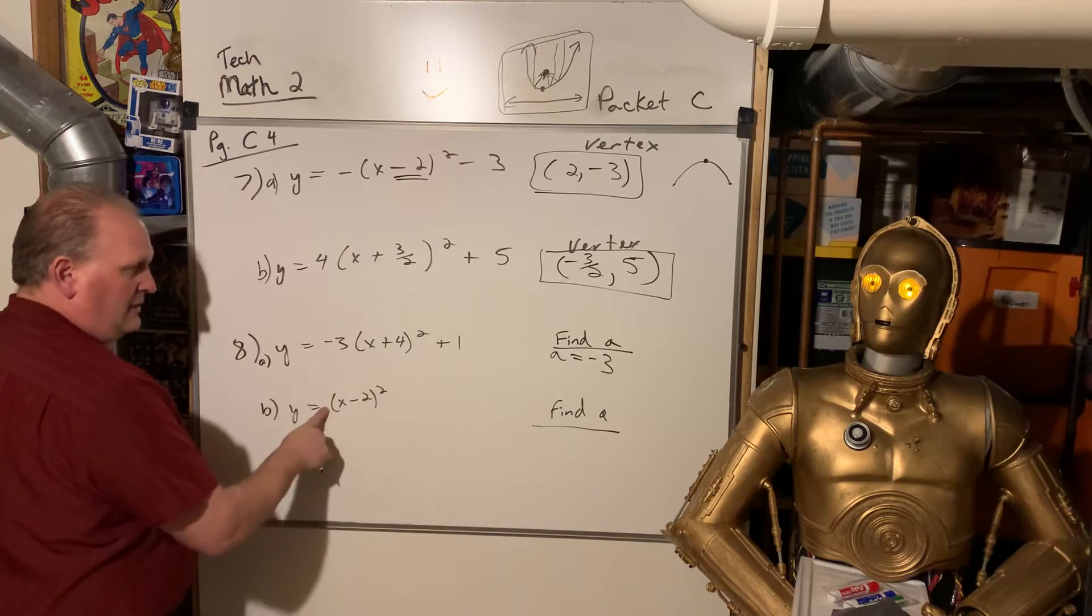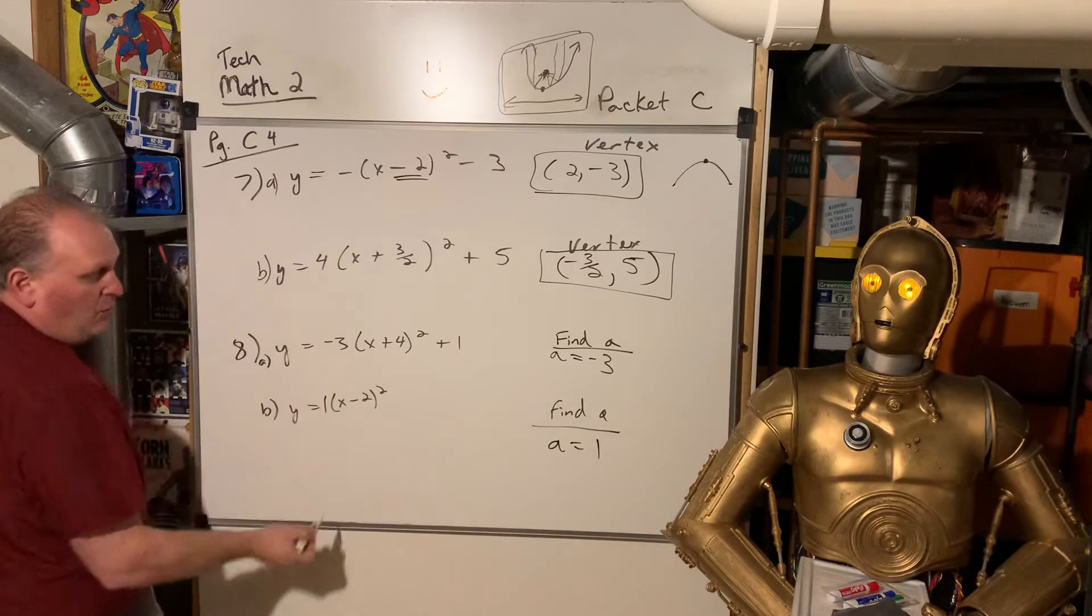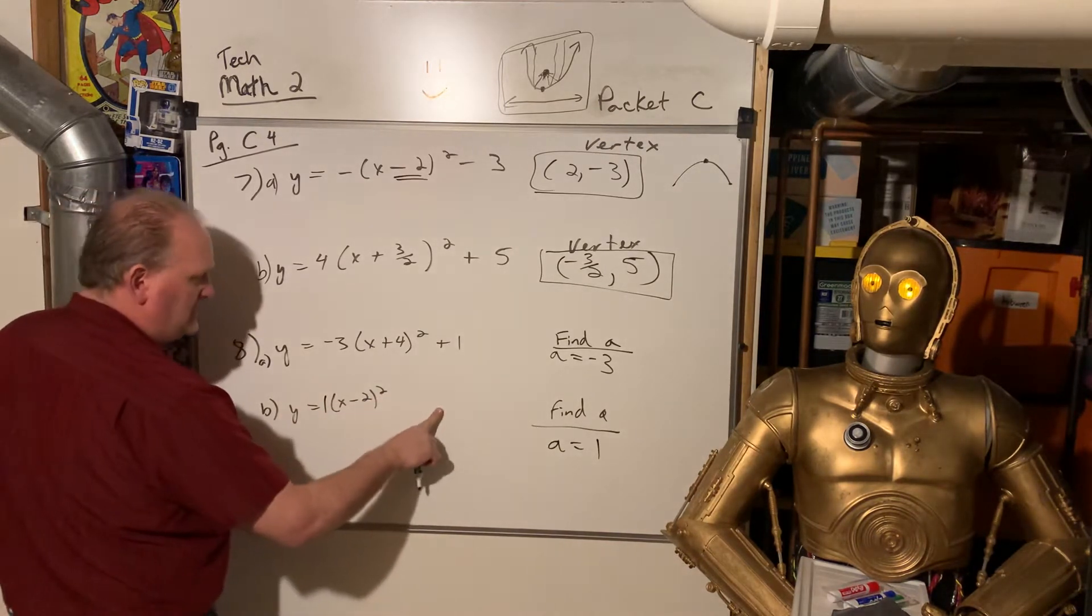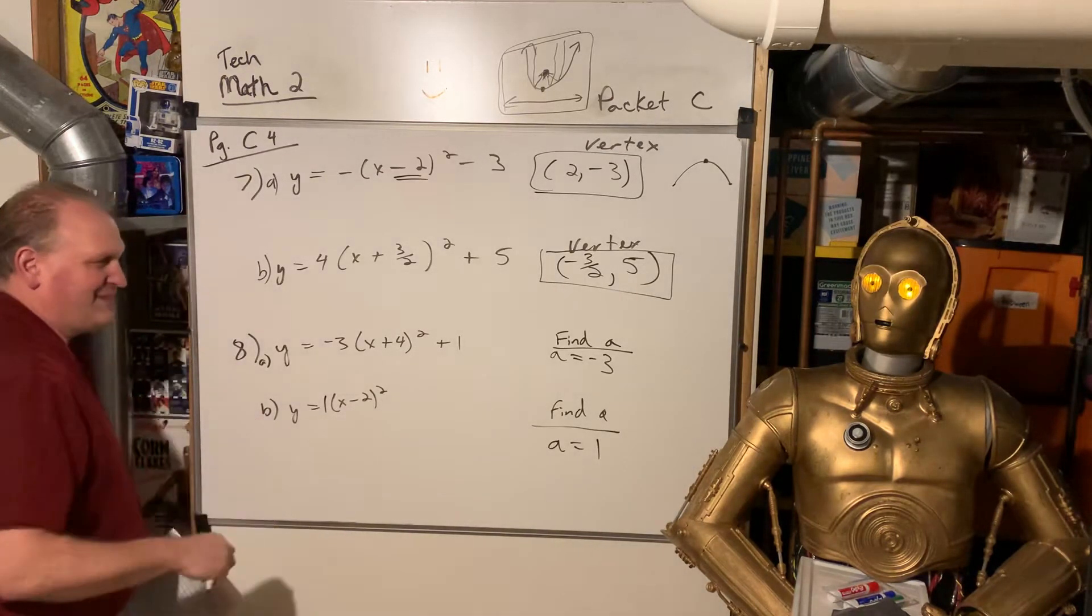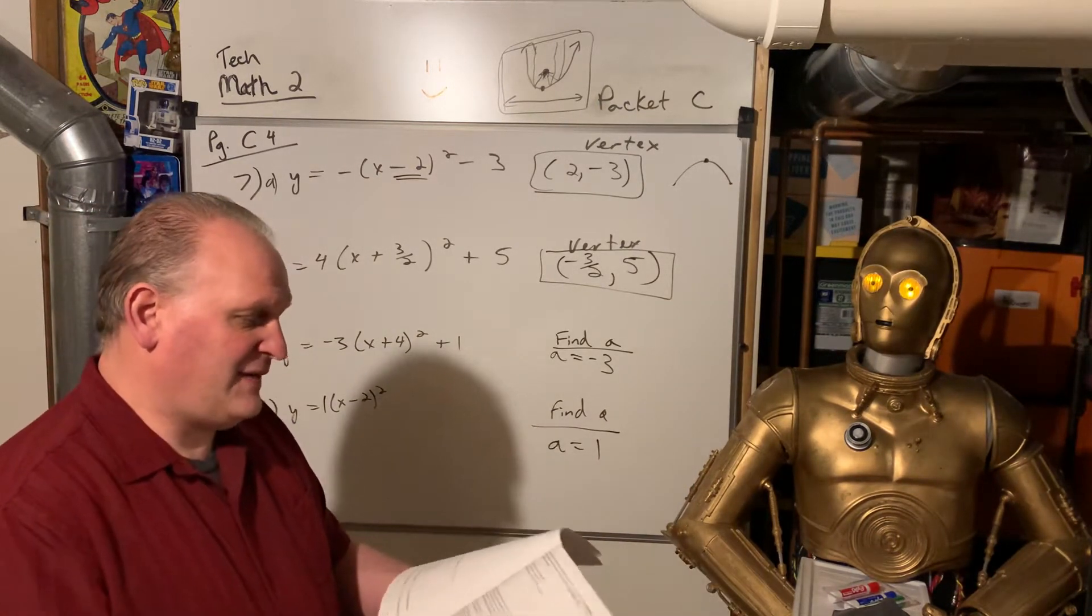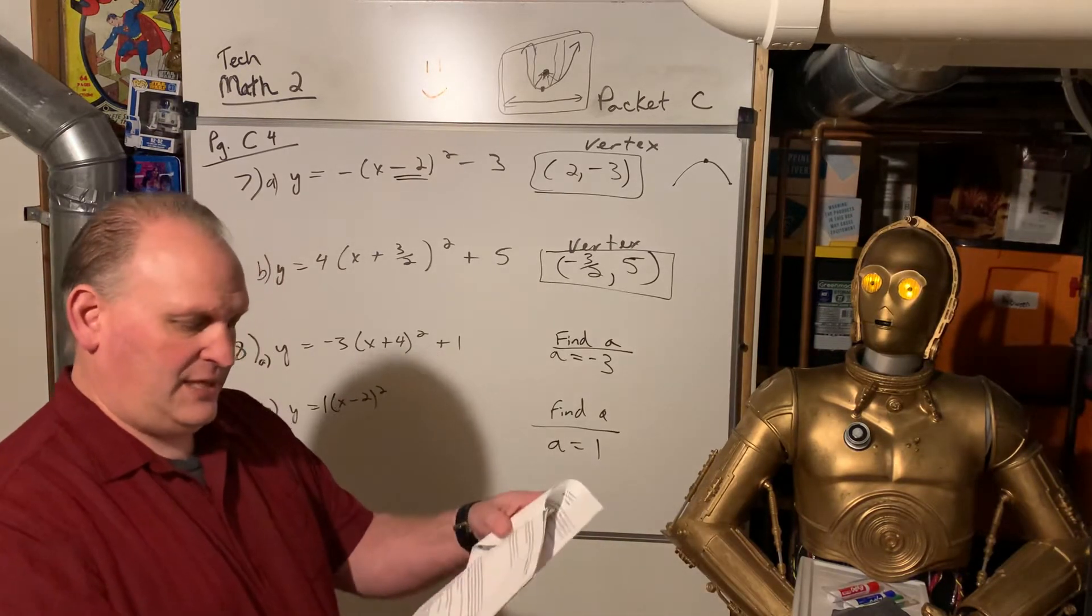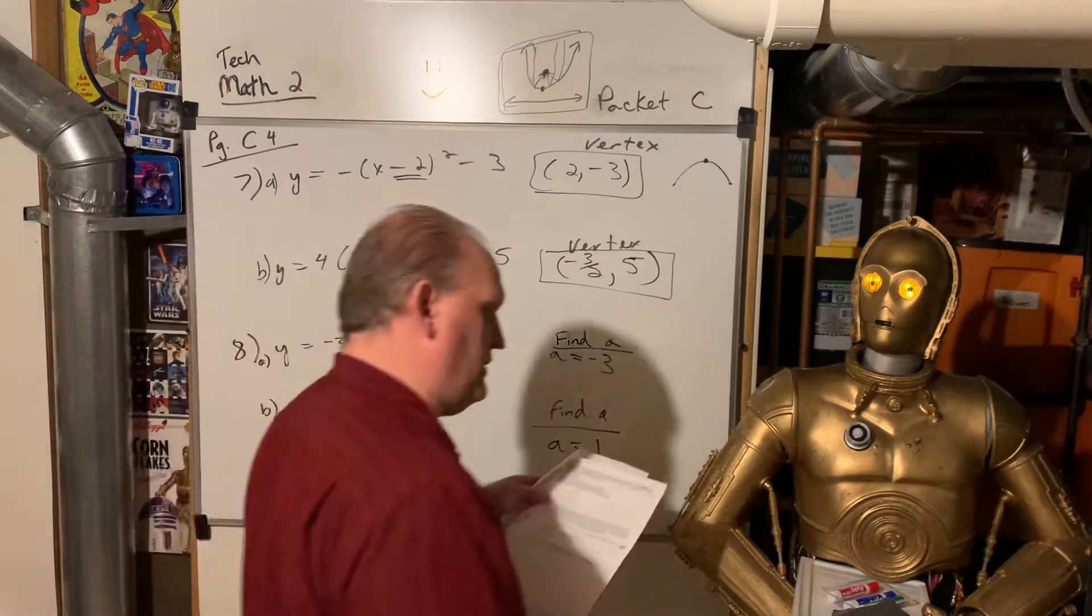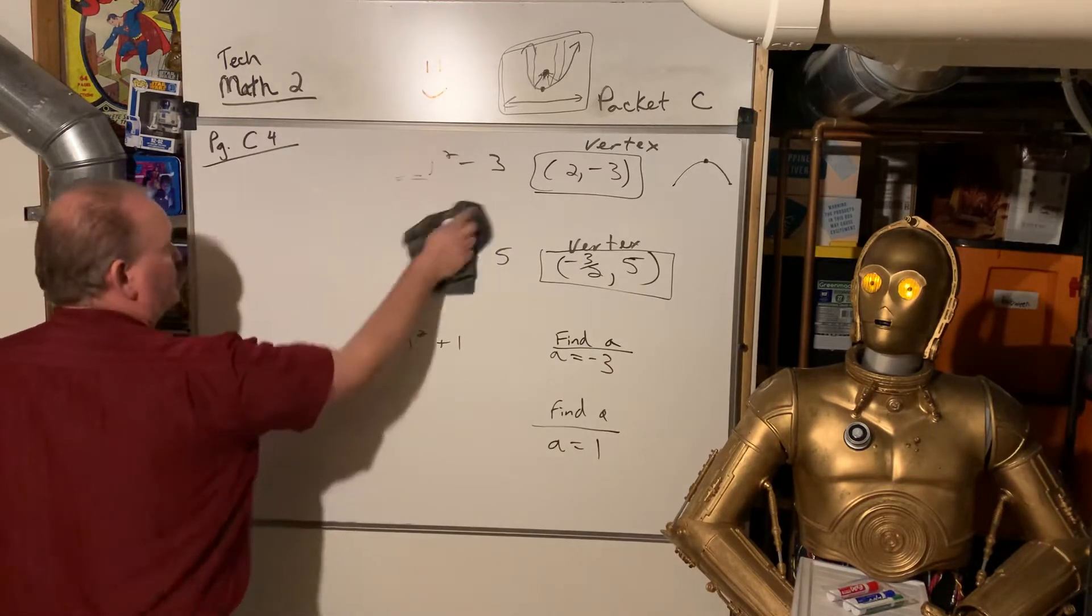This one, A is equal to 1. Remember, when there's nothing out front, there's really a 1 there. And so that would open up. The vertex would be positive 2, 0. And that's it. We're going to look at more examples of that. So if I just said that too fast, don't worry. We're going to look at, on the next page, on C5, let's look at 11 and 12, where they want us to say all this stuff about the parabolas that are given.